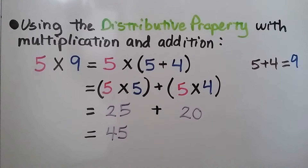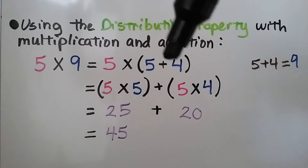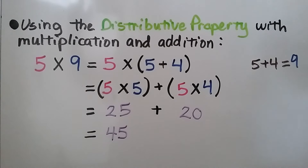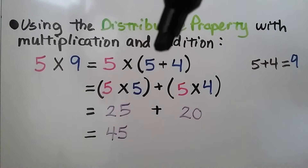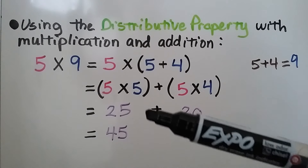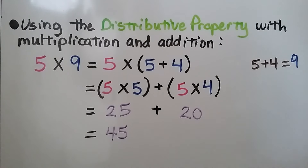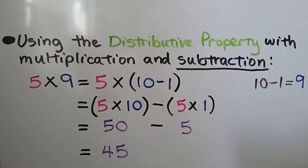Using the distributive property with multiplication and addition: 5 times 9 is equal to 5 times (5 plus 4), because 5 plus 4 equals 9. We can write this as 5 times 5 plus 5 times 4. 5 times 5 is 25, and 5 times 4 is 20. 25 plus 20 equals 45.